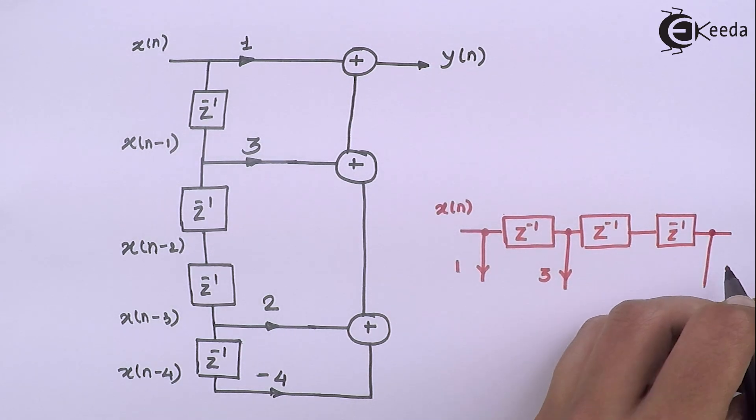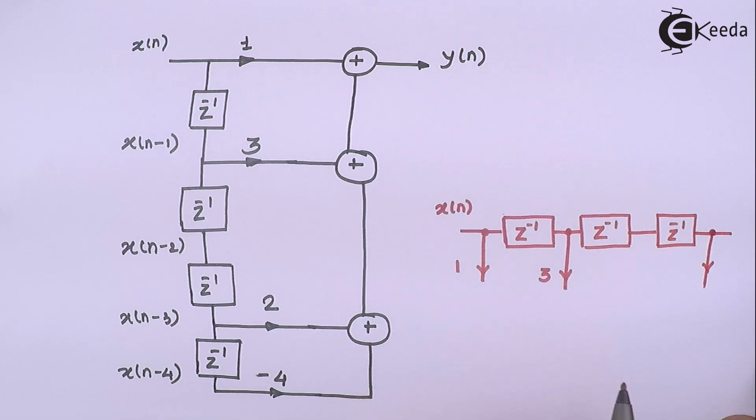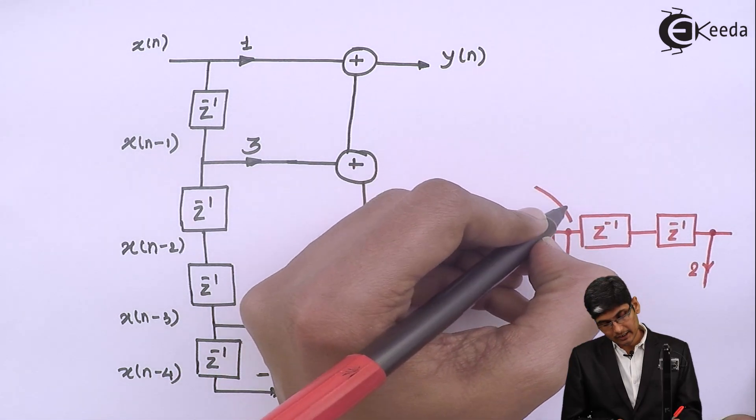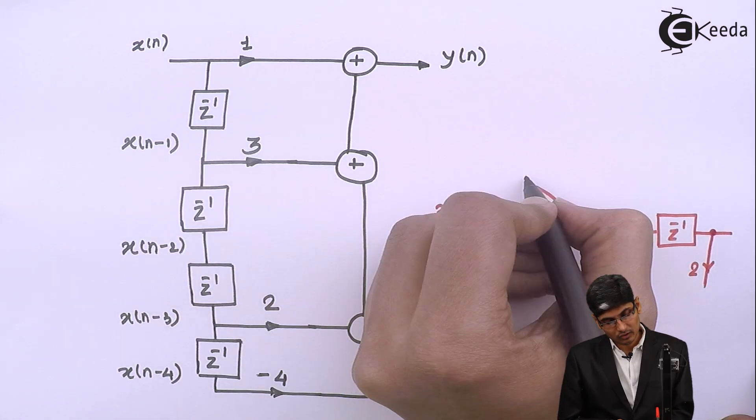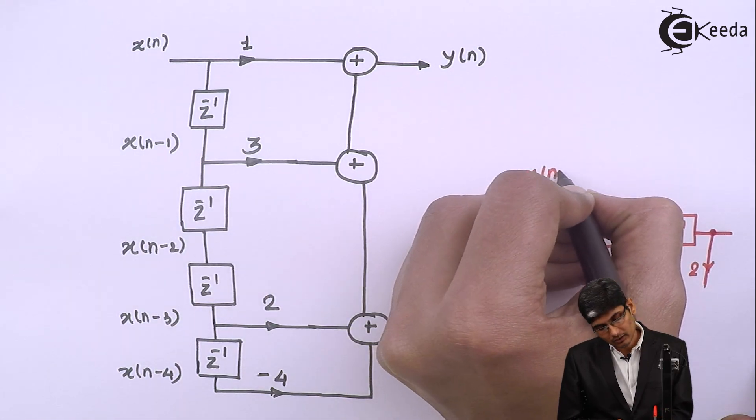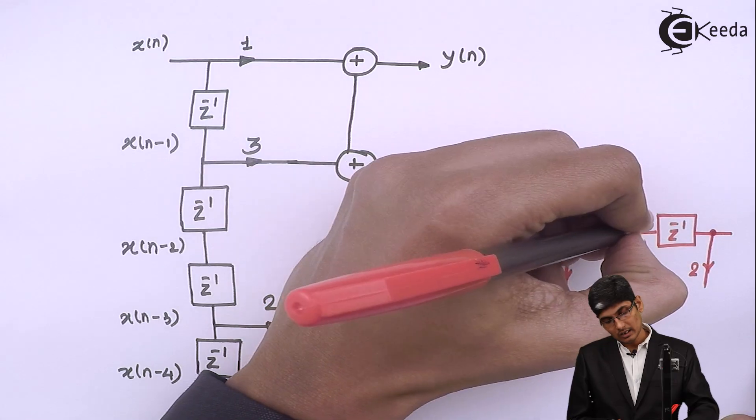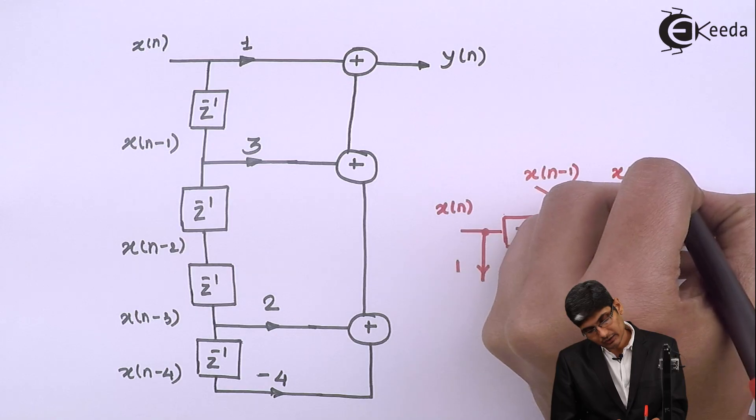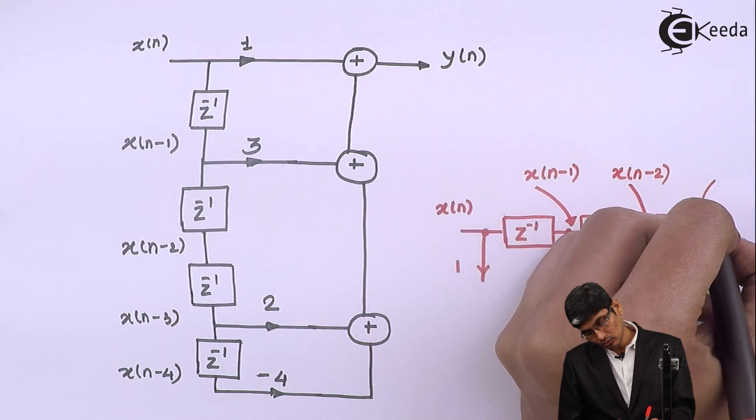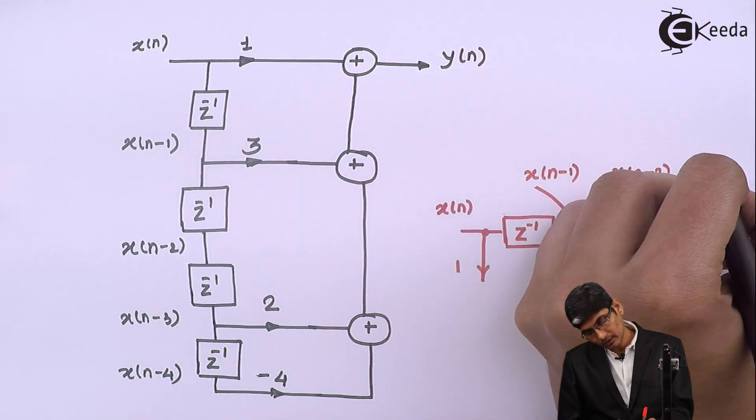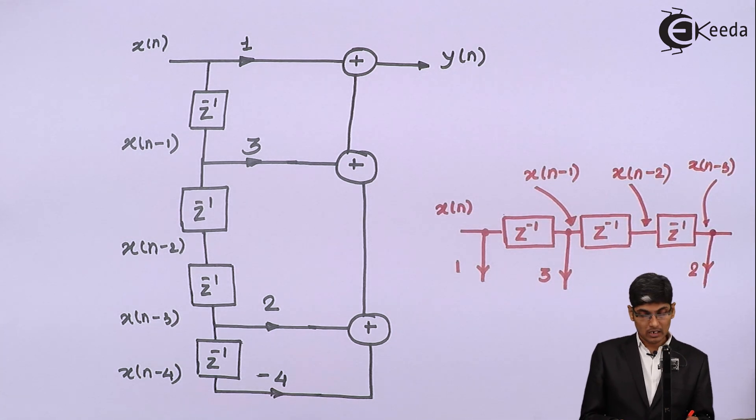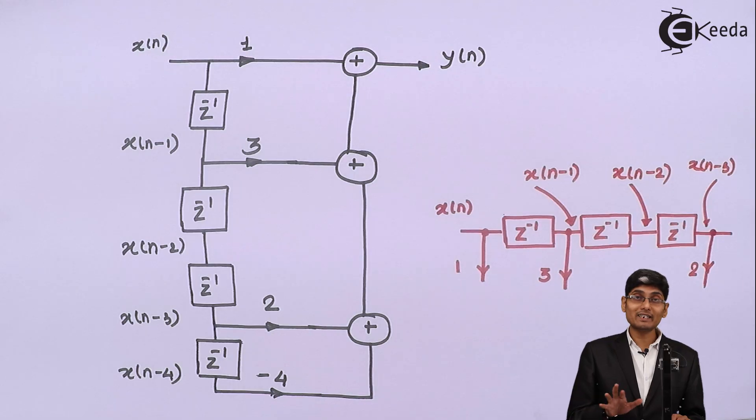So, we have a delay of 3 which is again having a multiplying factor of 2. So, at this point, at this node, I have the X of N as X of N minus 1 which is delayed by 1. Here, at this node, it is again X of N minus 2. And at this node, it is again X of N minus 3. Now what we have to do? We need to add them.